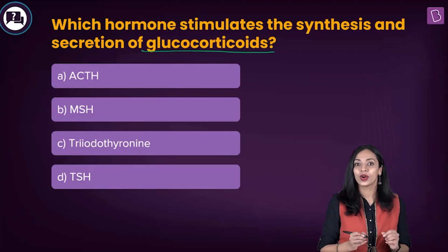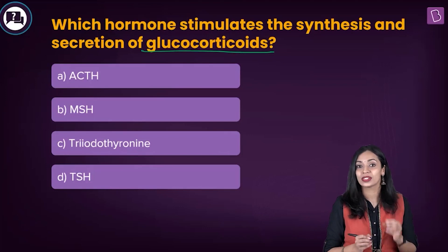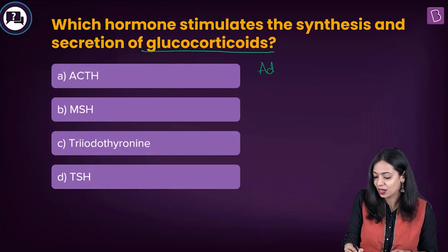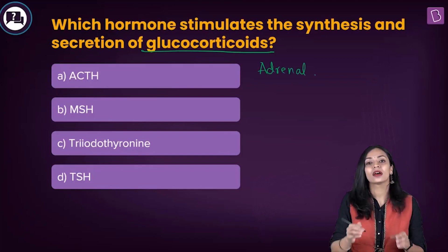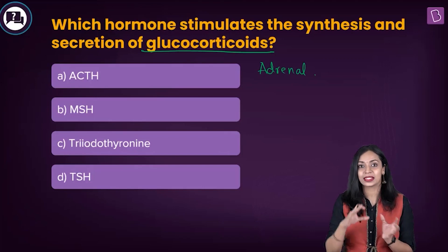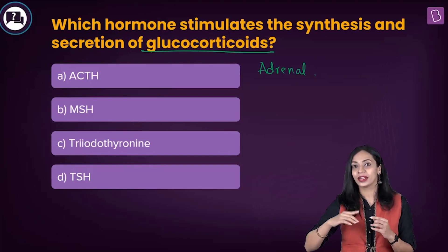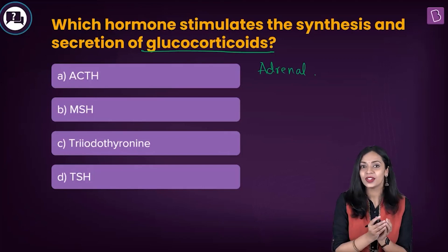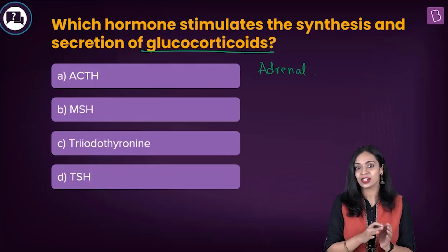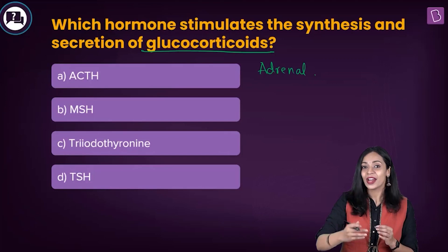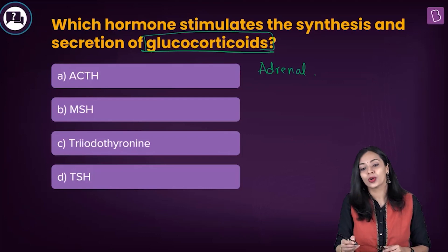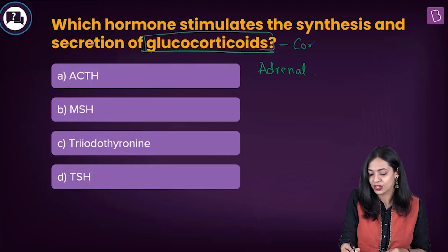What are glucocorticoids? Glucocorticoids are a type of steroid hormones that are produced by the adrenal cortex. The adrenal gland is a pair of glands located on top of our kidneys — 'renal' means kidney. The adrenal gland has two parts: the outer region is known as the cortical region, and the inner region is known as the medulla. The adrenal cortex is responsible for the production of glucocorticoids, for example cortisol.